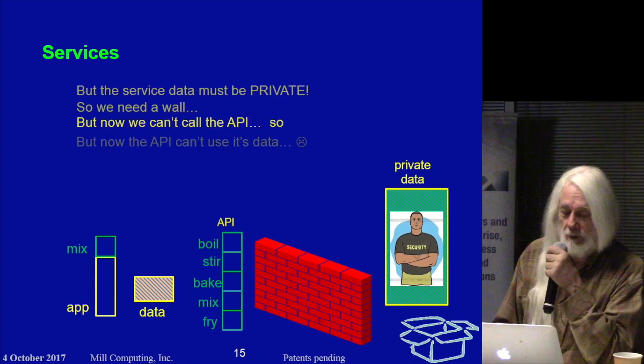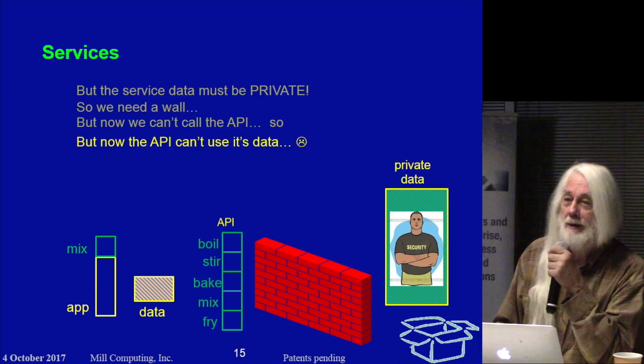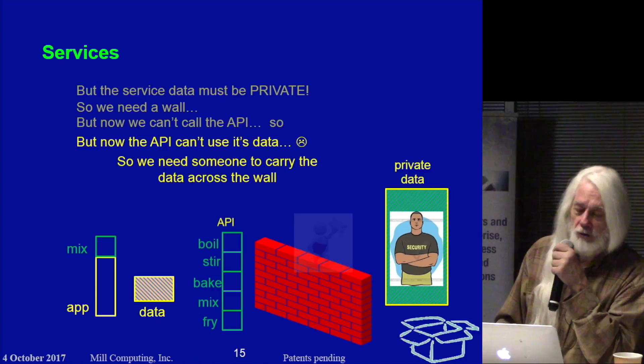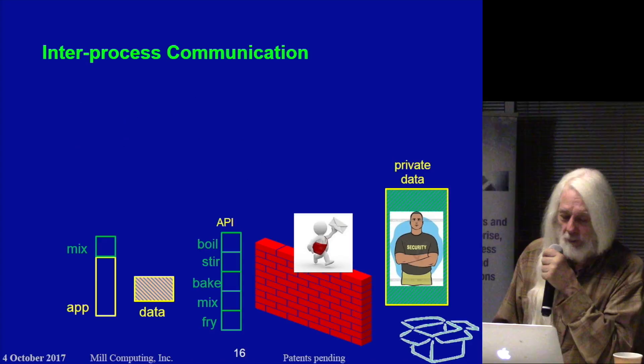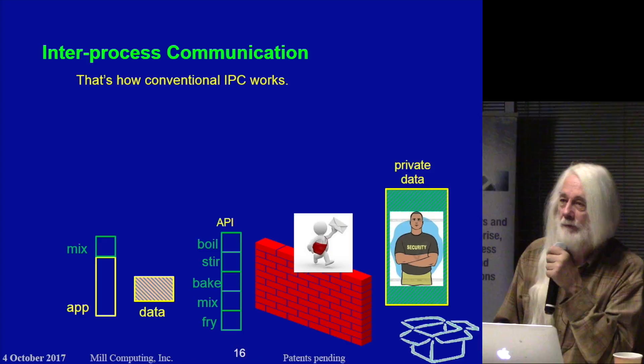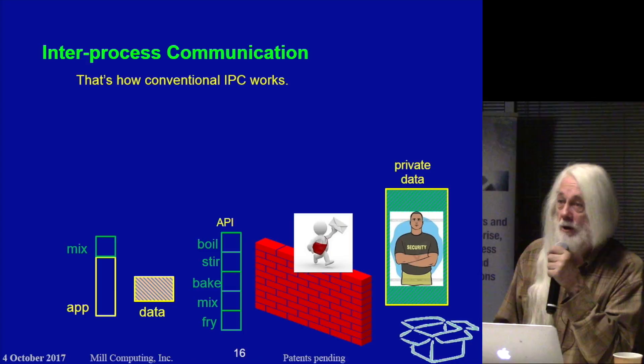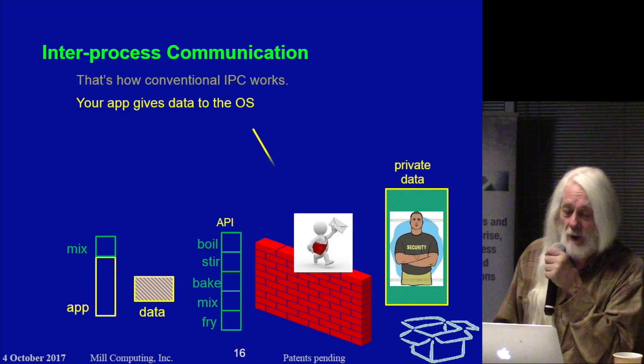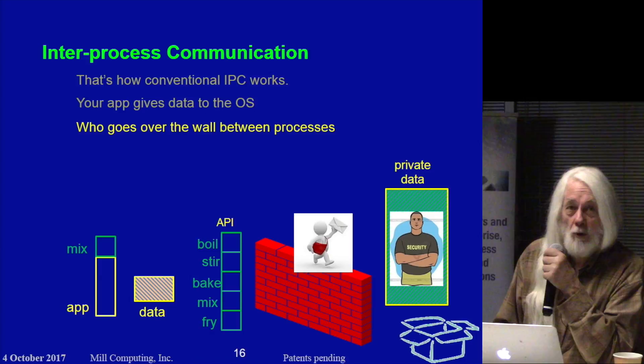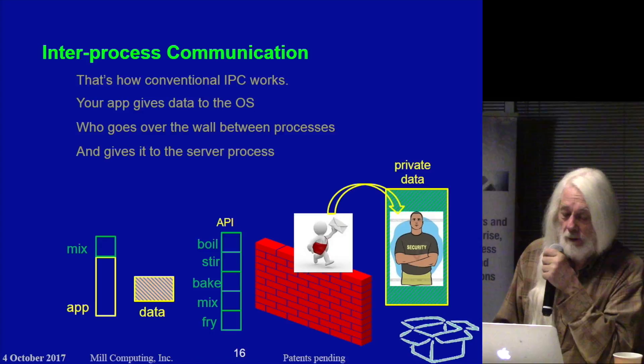Now we can't call across the wall because the API is on the far side that we cannot reach. So we have to move the API onto our side of the wall so that we can call it. But now the API can't reach its own data because there's a wall between it and its own data. So we need something to carry the data across the wall, and that will be the operating system. What happens is you call the operating system saying, here's a buffer full of stuff, pass it to him. You're never actually talking to a different process — you always go through an intermediate which does address translation and other things. That's how conventional IPC works: your app gives the data to the OS, who goes over the wall and gives it to the server, back and forth, and it ends up being fabulously expensive.